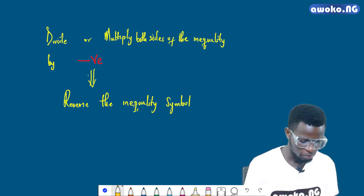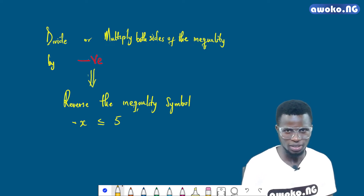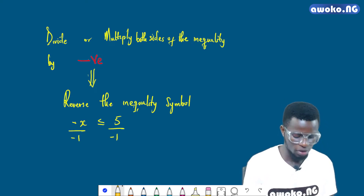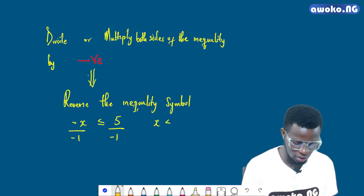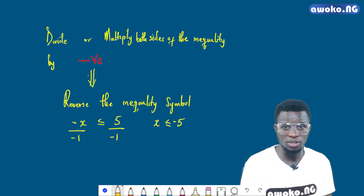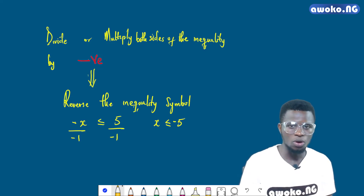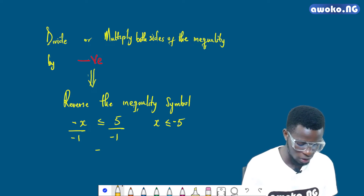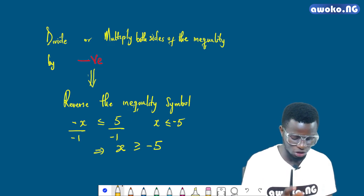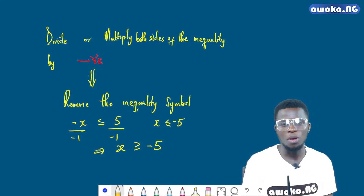For example, let's say we have minus x less than or equal to 5, and I am looking for x, not minus x. The only way I can do this is to divide through by minus 1. It would be wrong to say that x is still less than or equal to 5, or that x is less than or equal to minus 5. Since I am dividing through by minus 1, I have to reverse the inequality sign — the less than or equal to sign — which gives me x is greater than or equal to minus 5.